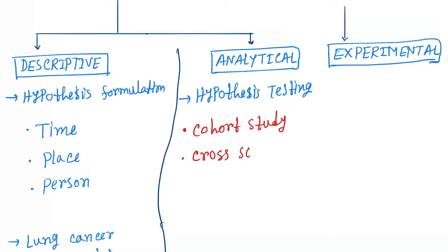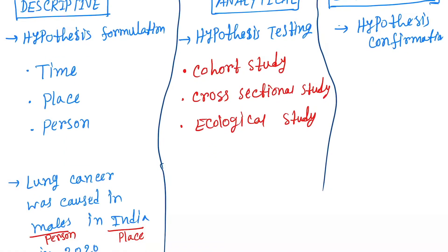Next is experimental. Experimental is the hypothesis confirmation study. So we do here RCT, that is randomized control trial. Next is clinical trial, next is field trial, next is community trial.